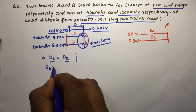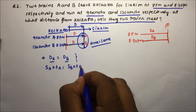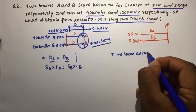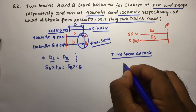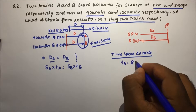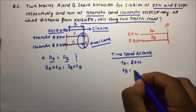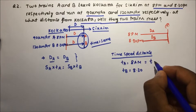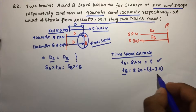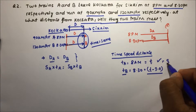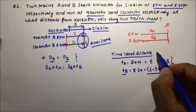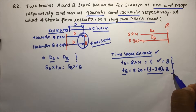D = S × T. In time-speed-distance problems, if data is given with reference to time, try to make the time the same. If train A starts at 8 am and train B starts at 8:30 am, assume train A's time is T; then train B's time must also be expressed in terms of T — that is, T minus 30 minutes. Making the time reference the same makes the solution much easier.